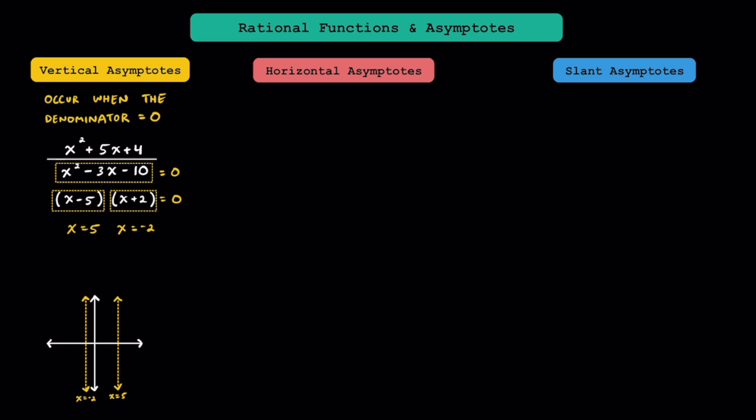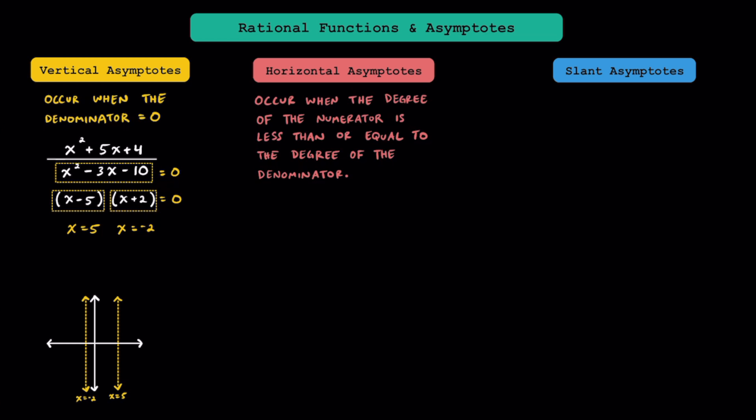Now let's talk about horizontal asymptotes. Horizontal asymptotes are only going to occur when the degree of the numerator is less than or equal to the degree of the denominator. That means if the degree on top is bigger than the degree on bottom, we're not going to have a horizontal asymptote. There are two situations you want to be aware of. The first is where the degree of the numerator is less than the degree of the denominator — when this happens, the horizontal asymptote is always y equals zero.